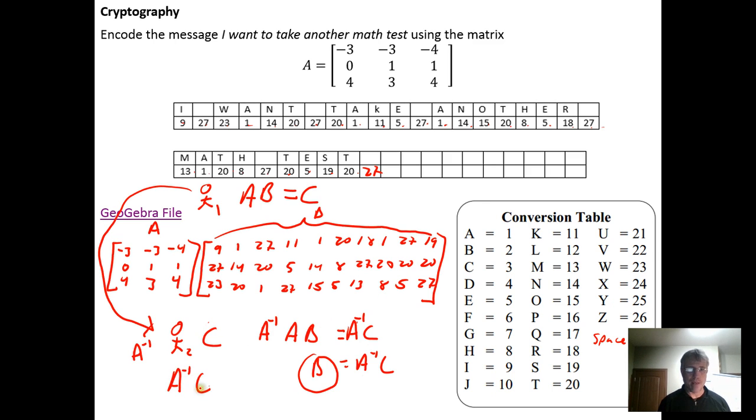If you send them C, all they need to do is multiply A inverse times C and boom, they have B back, the encoded matrix. They can lay the numbers out in order, reading them out of here, 9, 27, 23, 9, 27, 23, and then they can come over to the conversion table that you're using. In this case we did a simple one-to-one position correspondence table, and then they can interpret the letters and spaces and get the message back from you.